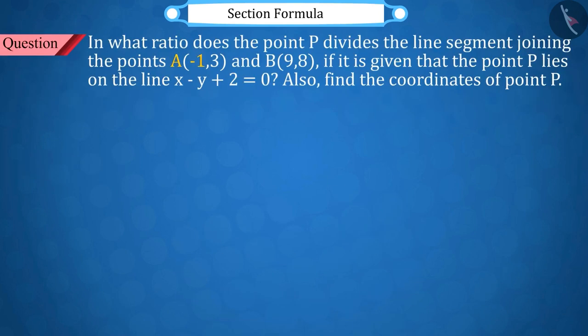In what ratio does the point P divide the line segment joining the points A(-1, 3) and B(9, 8), if it is given that the point P lies on the line x - y + 2 = 0? Also, find the coordinates of point P.